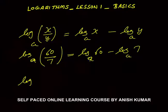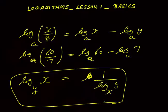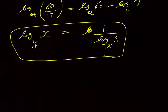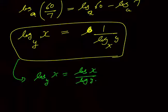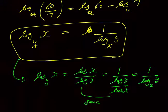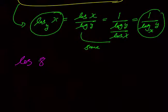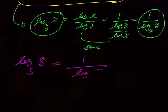Another concept: log of x to the base y can always be written as 1 / log_x(y). If you interchange the number and the base, the reciprocal appears. This is because log_y(x) = log(x)/log(y), and the reciprocal is log(y)/log(x) = log_x(y). For example, log_5(8) = 1 / log_8(5).